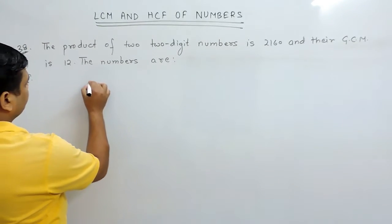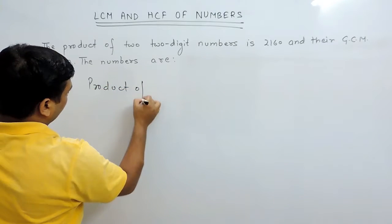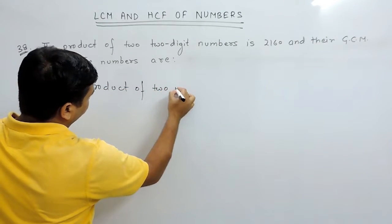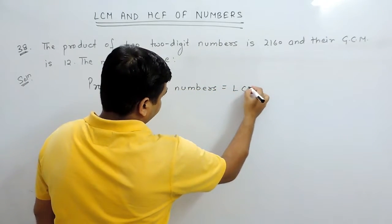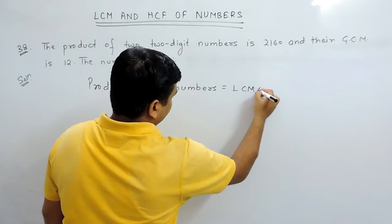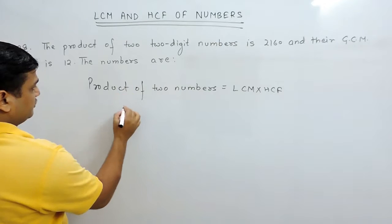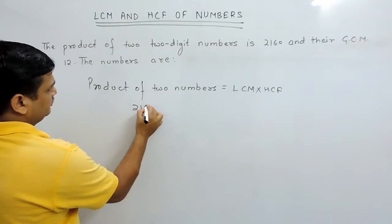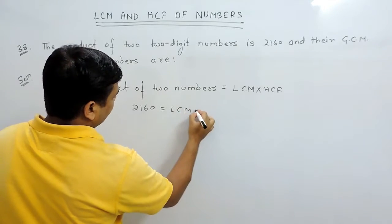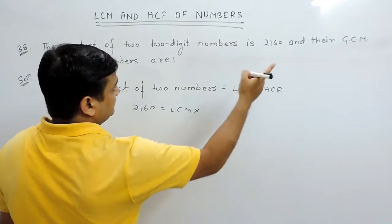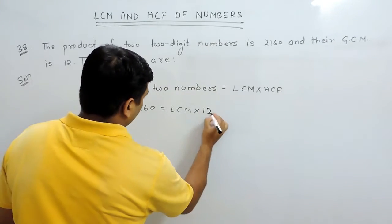We have a formula that is product of two numbers equals LCM into HCF. The product of numbers here is 2160, LCM is not given, and HCF is GCM, that is greatest common measure, which is 12.